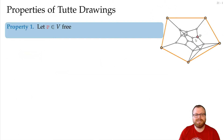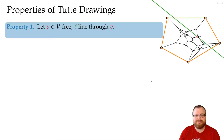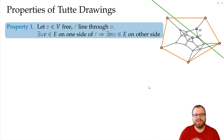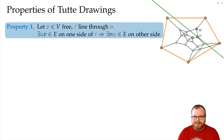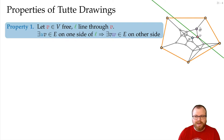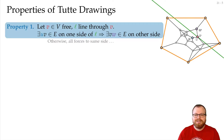Assume we are given some Tutte drawing and we look at a single vertex V that is free — not on the outer face. We want to place some line through this vertex. Property 1 says: if there is a neighbor of V on one side of the line, then there is also one on the other side. If all the neighbors of V lie on one side, then all the forces would pull V away from the line. Since we are at an equilibrium, there have to be forces that balance out, so this cannot be.